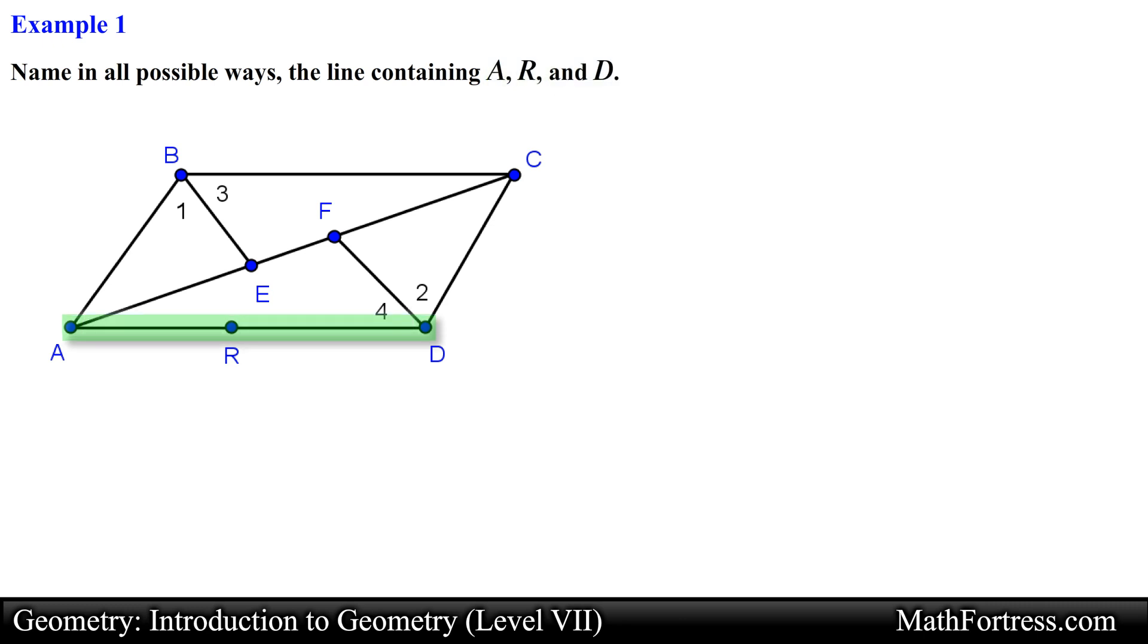Recall that we symbolically denote lines by using the letters of two points and drawing a line directly on top of the letters. For this example, the line containing these three points can be named as line AR or line AD or line RA or line RD or line DA or line DR.